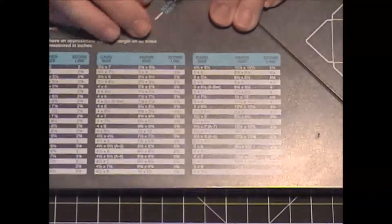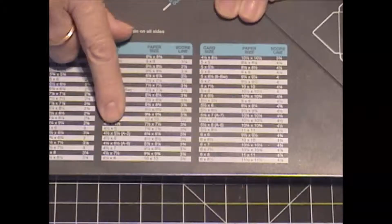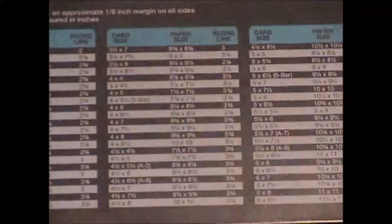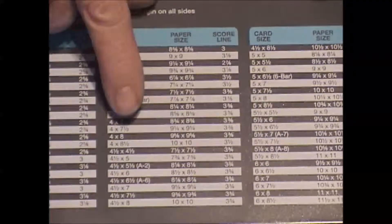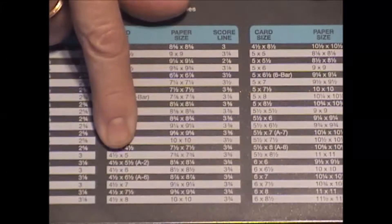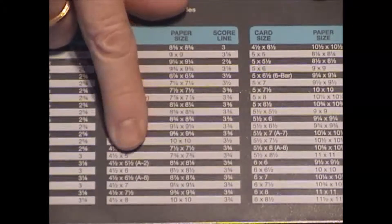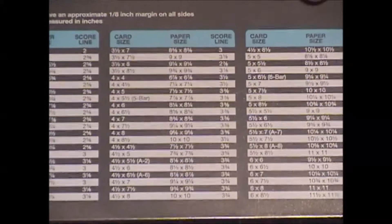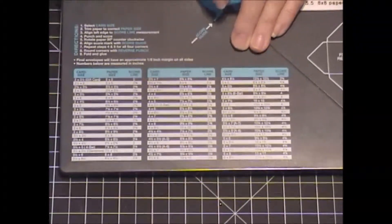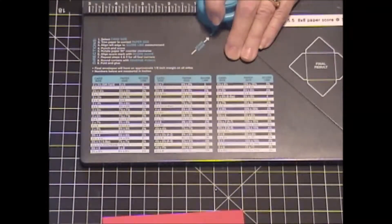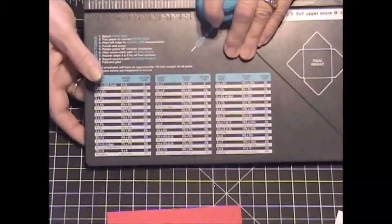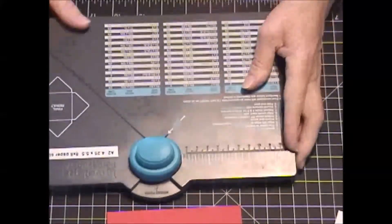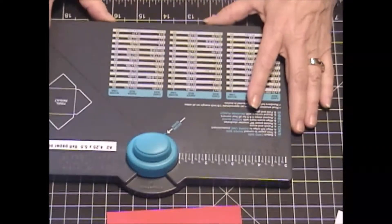The Memory Keepers one does say A2 on it right here, but their card that they're calling A2 is four and a half instead of four and a quarter by five and a half, so that's why I have my little label. I don't have to guess. I could just look at that because sometimes you want to maybe make a card envelope that's a different color, maybe in some DSP, some real subtle DSP, or just something to match your card besides white or vanilla.